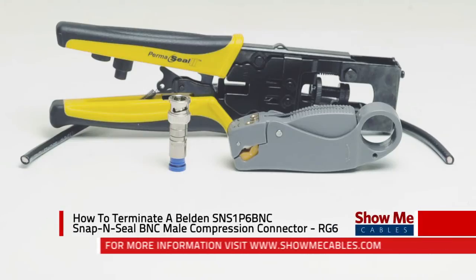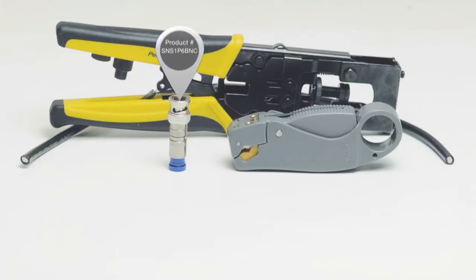Hi, this is Mark from Show Me Cables, and today I'm going to show you how to terminate a Belden SNS1P6BNC, a snap and seal compression type connector for RG6 cable.